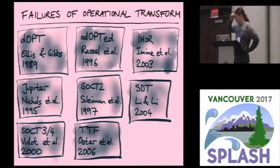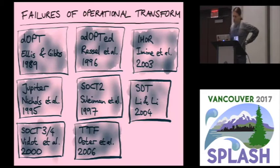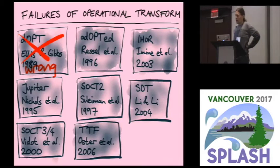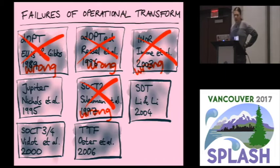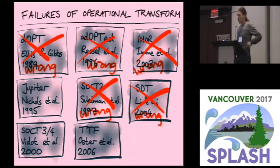Operational transformation has a bit of a long and complicated history, and lots of different algorithms have been proposed. All of these algorithms here on the slide are just for text editing. They simply support the data type of an ordered list of characters in which users can insert characters and delete characters. The reason why there are so many of them is that many of them were published and then later turned out to be wrong.